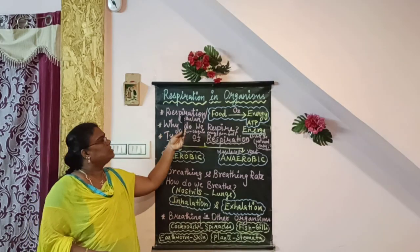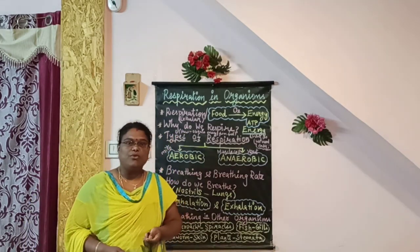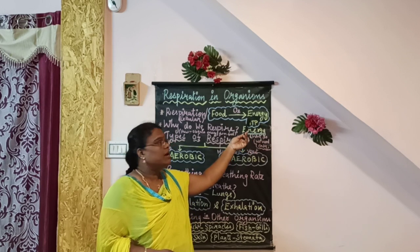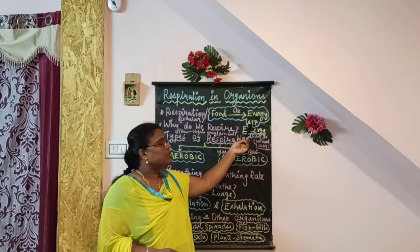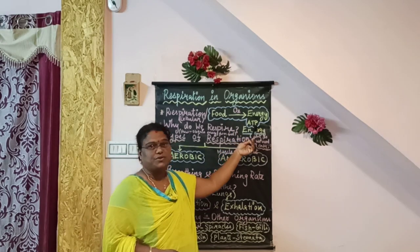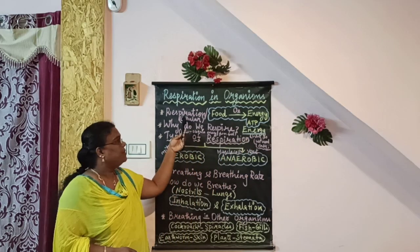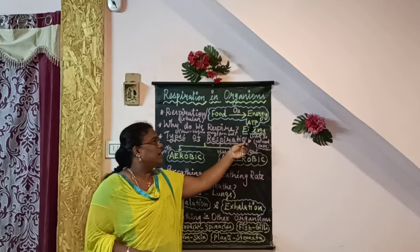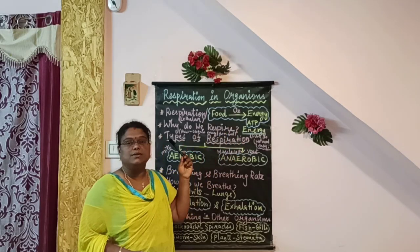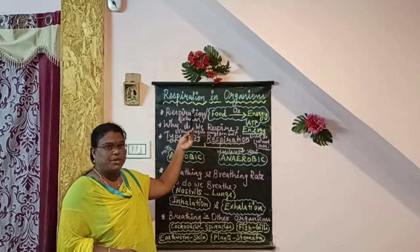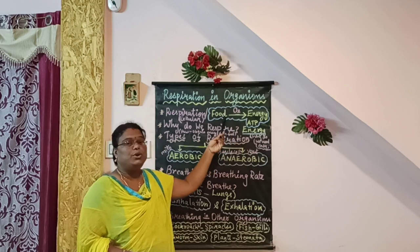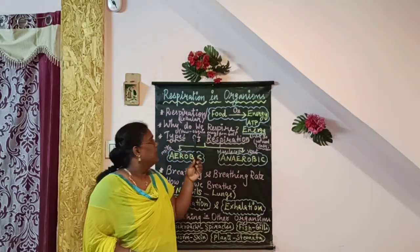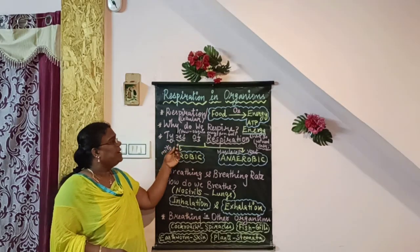First we will see what is respiration. Respiration is a process of breakdown of food material to release energy — that is called ATP — in the presence of oxygen. The abbreviation ATP stands for adenosine triphosphate. Respiration is a process of conversion of food to energy in the presence of oxygen. This process takes place inside the cell, specifically in the mitochondria, so it is called cellular respiration.